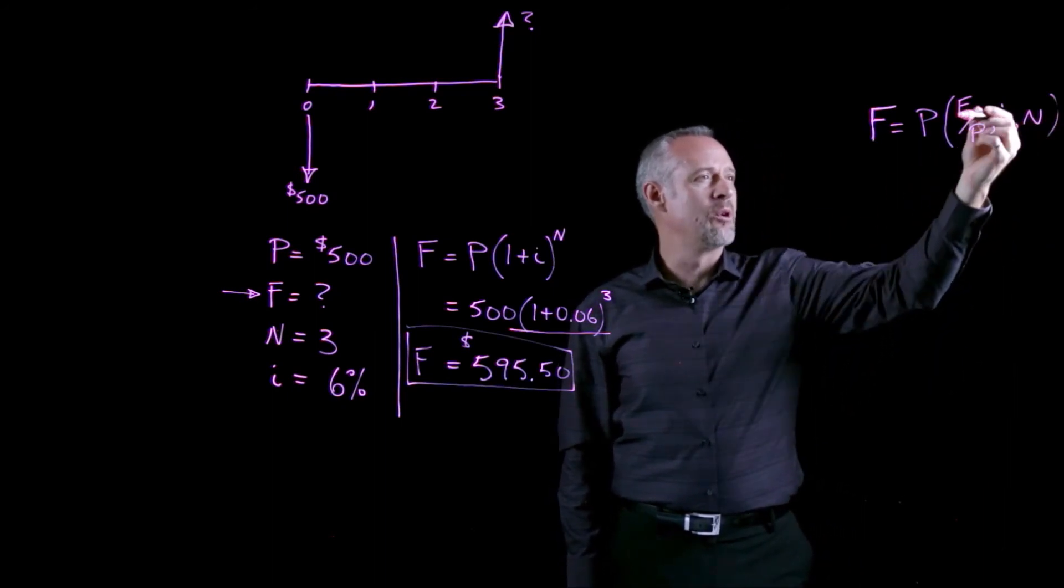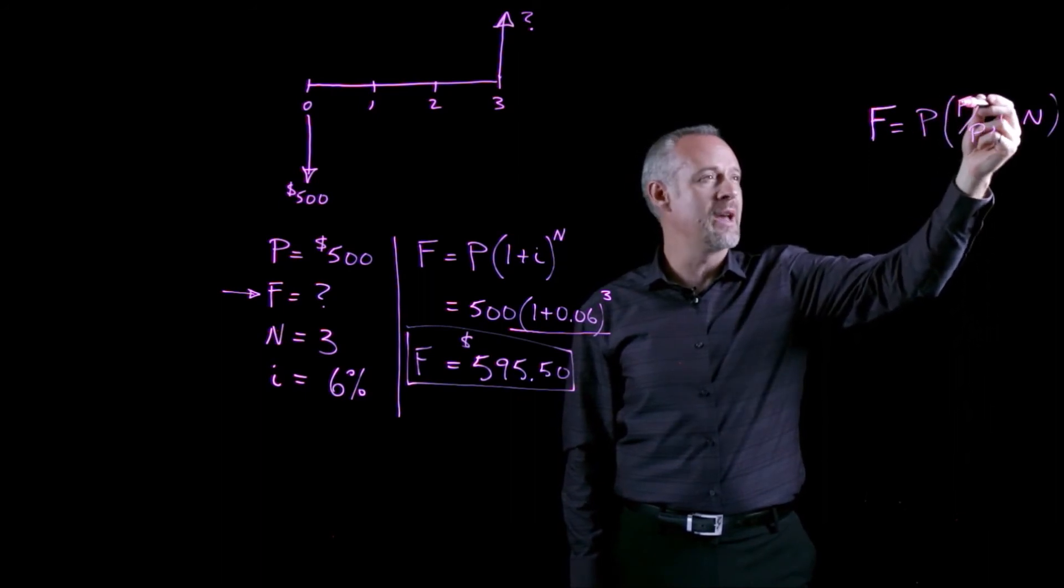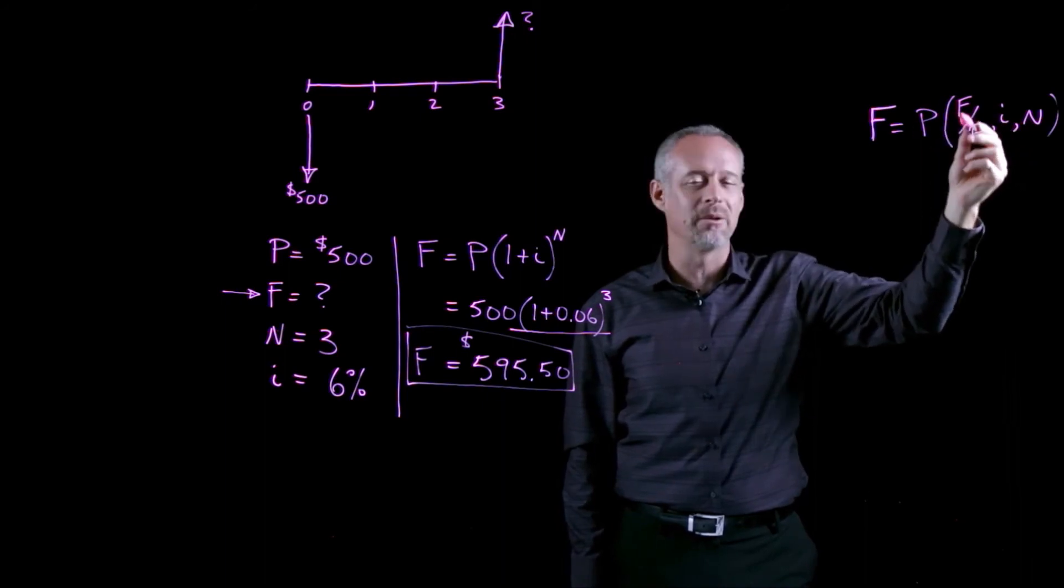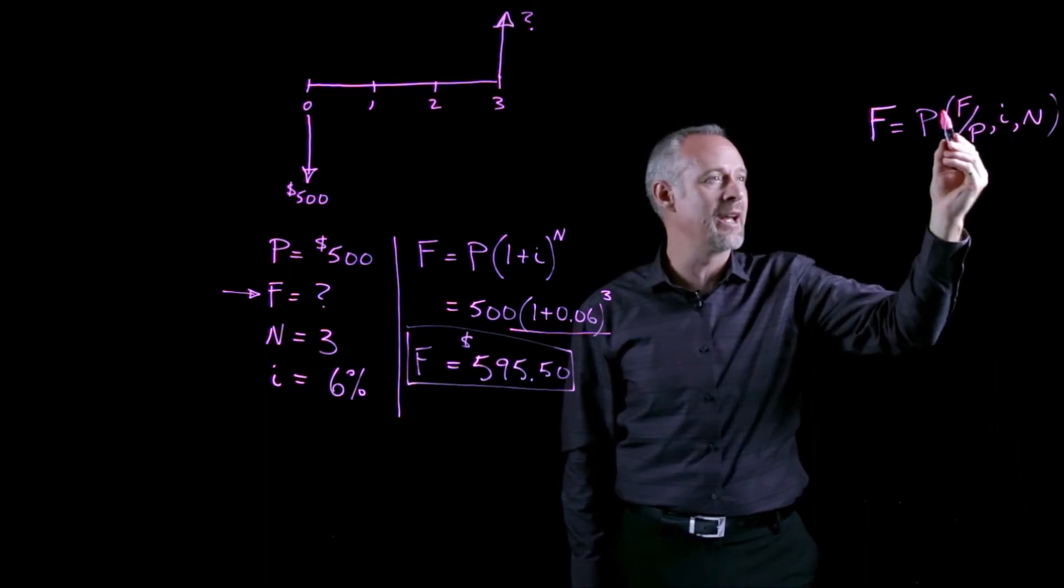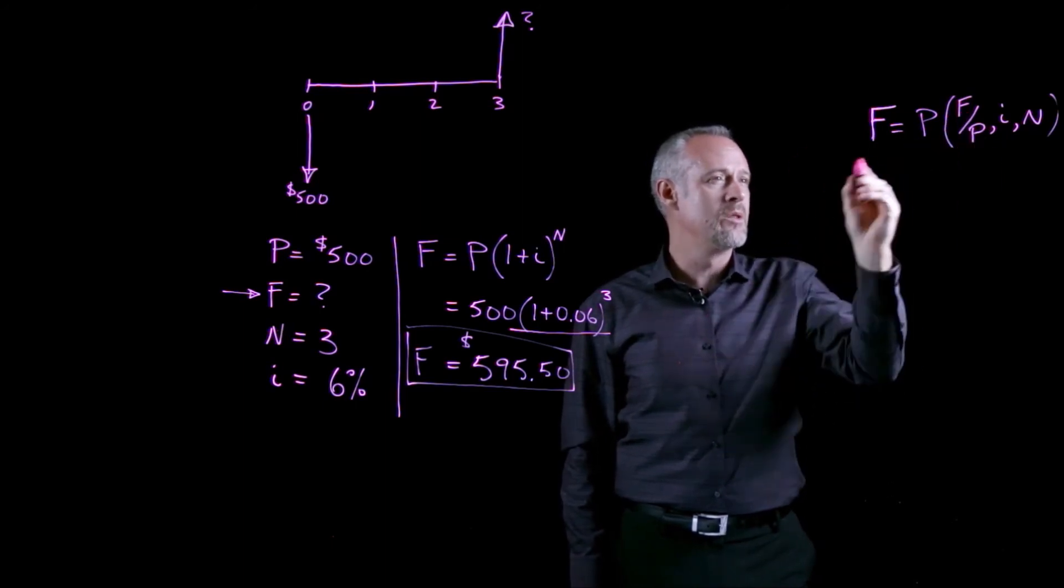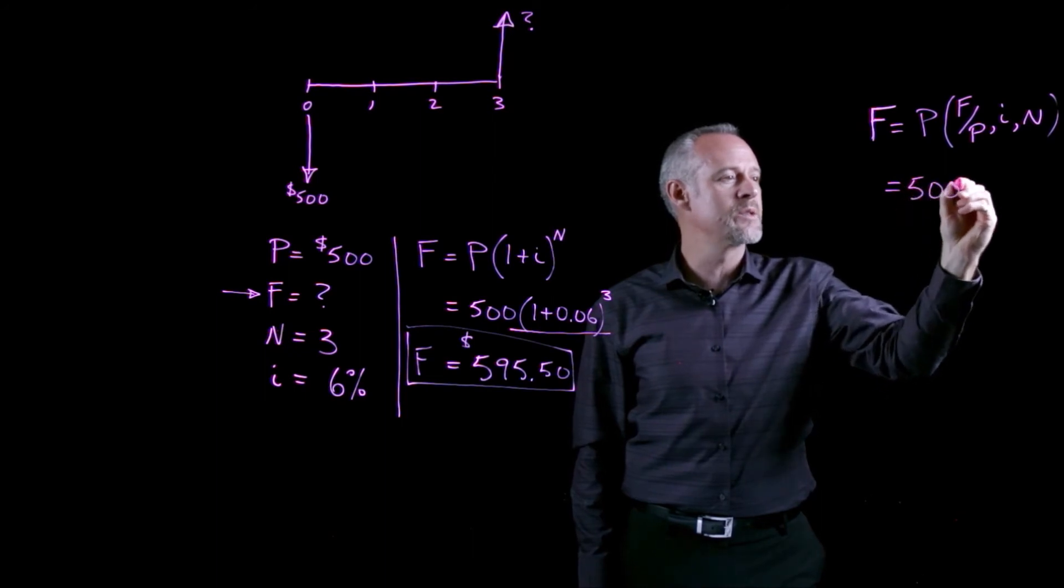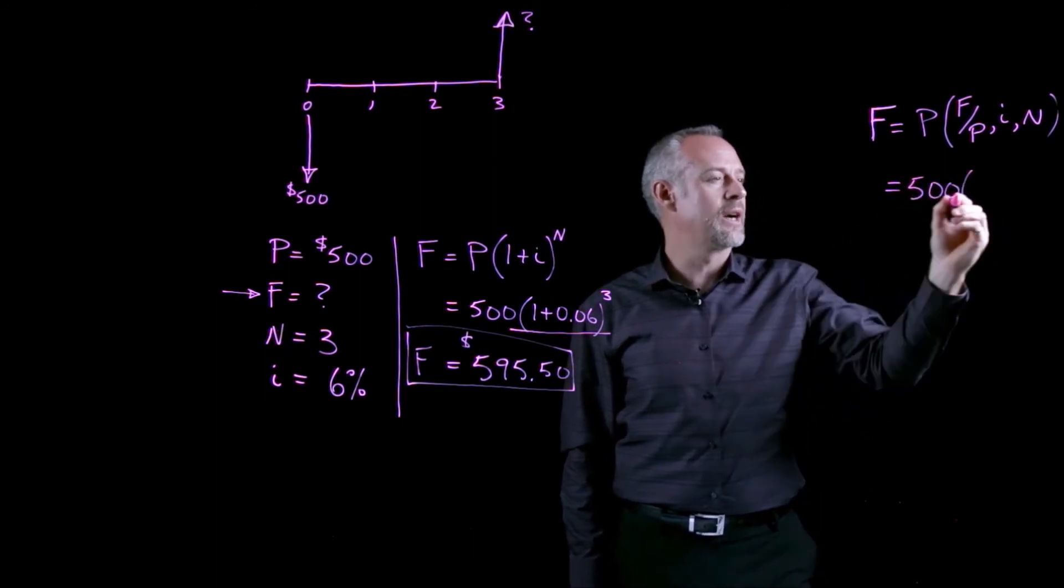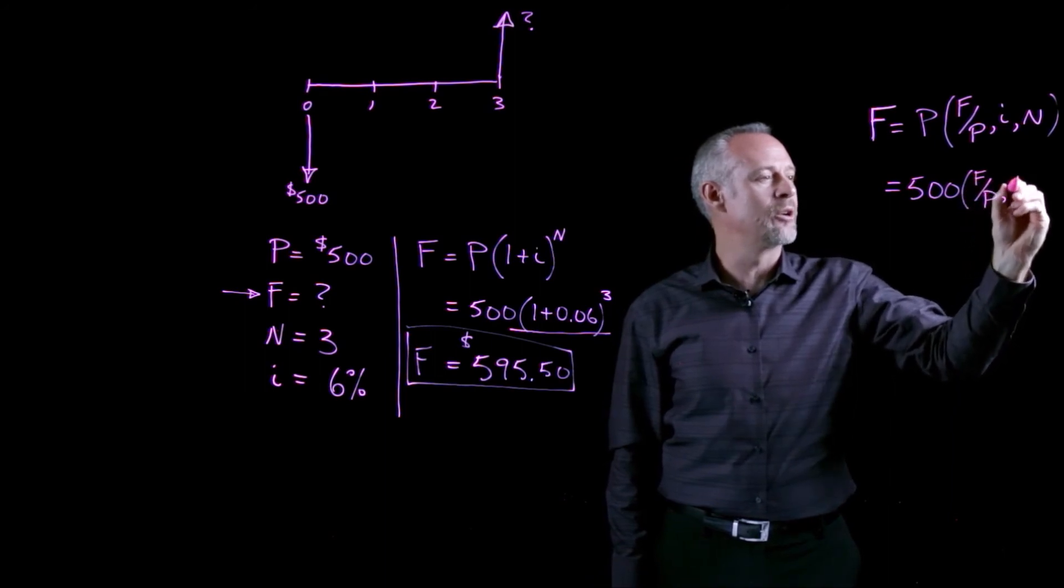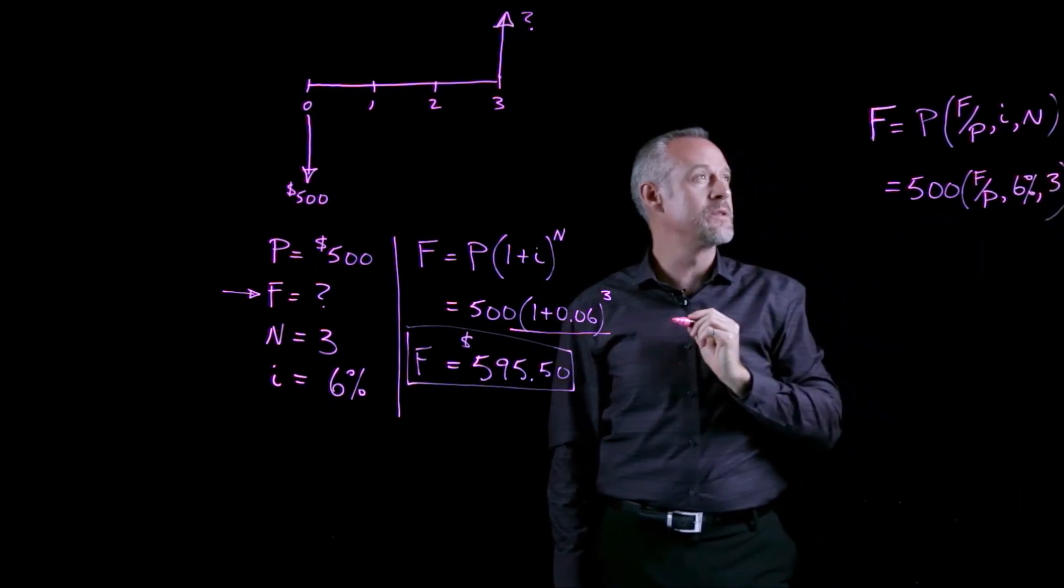Pretty simple. The way to remember it is if you know the value of P and you multiply it by the F given P factor, you could sort of view that almost like a little piece of algebra and say the P's cancel. What I'm left with is the F, which is what I'm looking for. For this particular problem, we would write it 500 times the F given P factor for 6 percent and three periods.